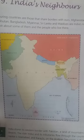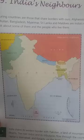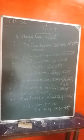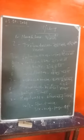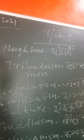Here you can see India's neighbors, that means the countries which are on the borderline of India. All these word meanings are related to India and its neighboring countries. First is 'neighbor' — Paroshi.